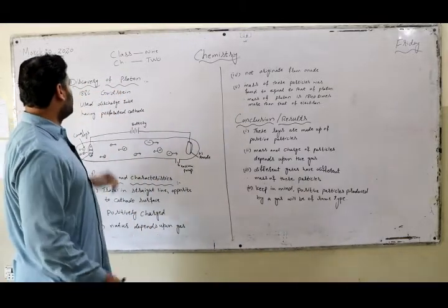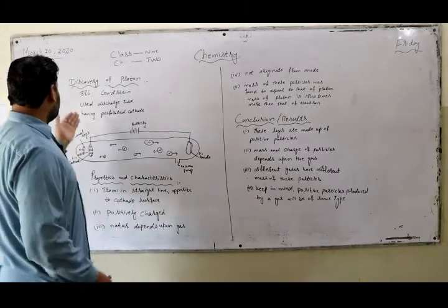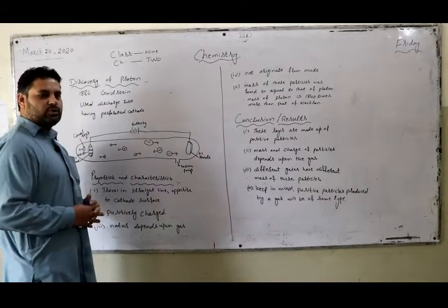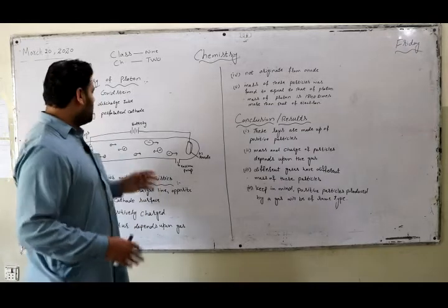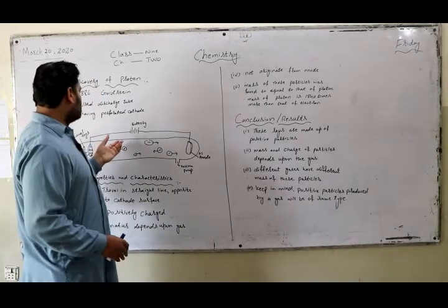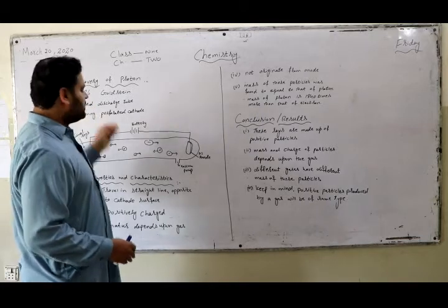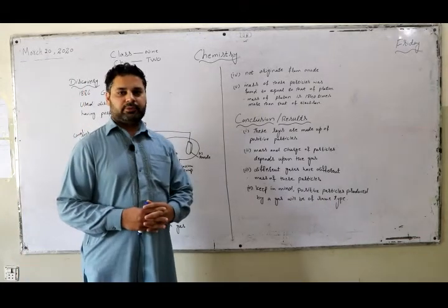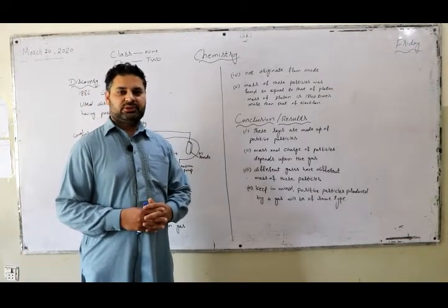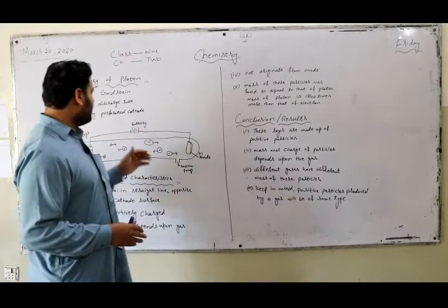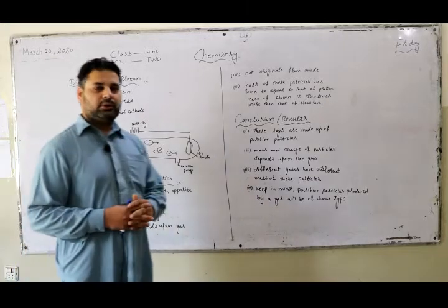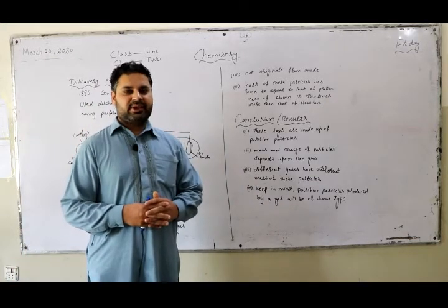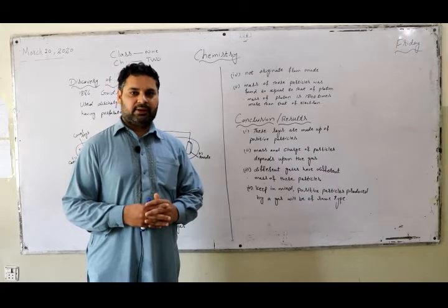Today we study about the discovery of proton. In 1886, Goldstein observed that in discharge tube another type of rays are also present which travel in opposite direction to the cathode rays. Later on these rays were named as canal rays.